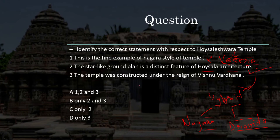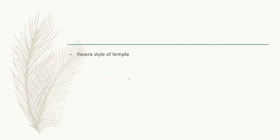Hoysaleshwara temple में star form के ground plan होते हैं — यह इसका distinct feature है। यह temple Vishnuvardhana के reign में 12th century में बनाया गया था। यह Vesara style का temple है। आज के लिए इतना ही — I hope this session is helpful for you. Please subscribe our channel and do comment. Thank you.